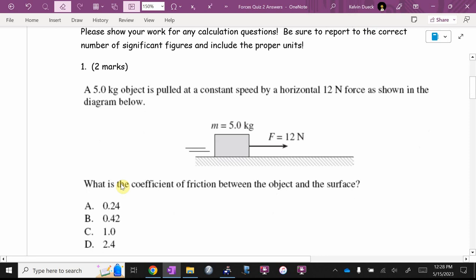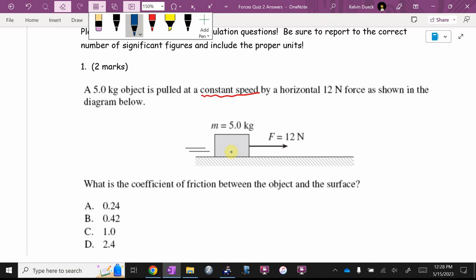Number one, an object is pulled, definitely I would underline constant speed, by a horizontal force. What's the coefficient of friction? They want me to find mu. This is a job for a free body diagram, although they gave me a picture. So what are the forces acting on it? Get the obvious one. I always start there, gravity.